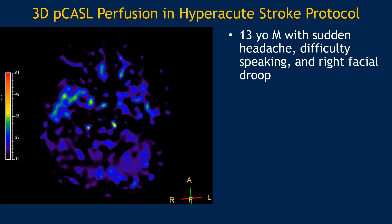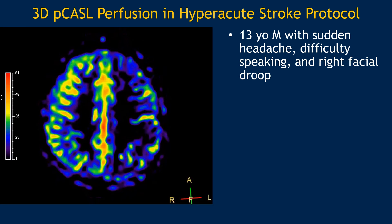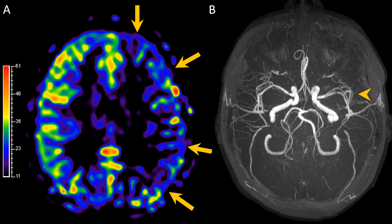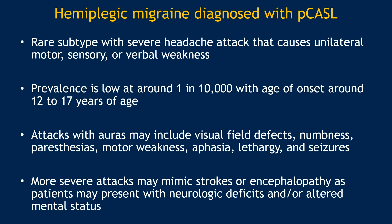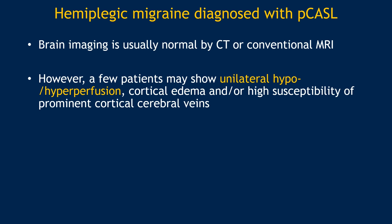Headaches can also present in many patients — for example, a child presenting with headaches causing right facial droop and difficulty speaking. We performed ASL, and the left cerebral hemisphere was much decreased in perfusion compared to the contralateral right hemisphere. The MRA was also slightly decreased in the left MCA territory. There was no restricted diffusion and there was some high susceptibility in the cortical veins. This is consistent with hemiplegic migraine — a very rare subtype of severe headache that can mimic a stroke, particularly presenting in the teen or pre-teenage years. Treatment is often supportive management. Brain imaging is usually normal on CT or conventional MRI, but perfusion imaging such as ASL can show unilateral hypo- or hyperperfusion, which can clinch the diagnosis.